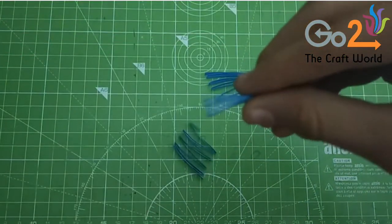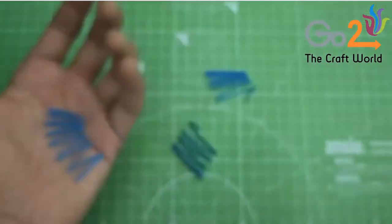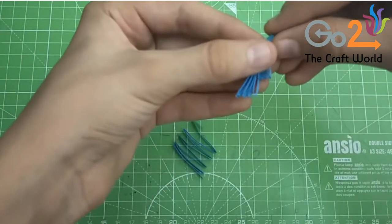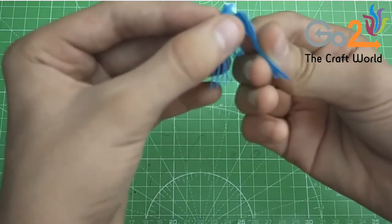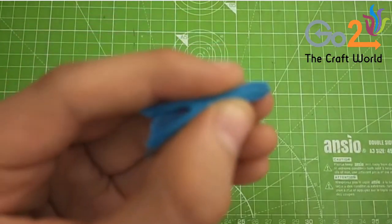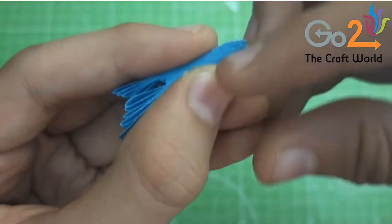And when you will join these three like this, it will get a curved shape. It will look like this after completing.